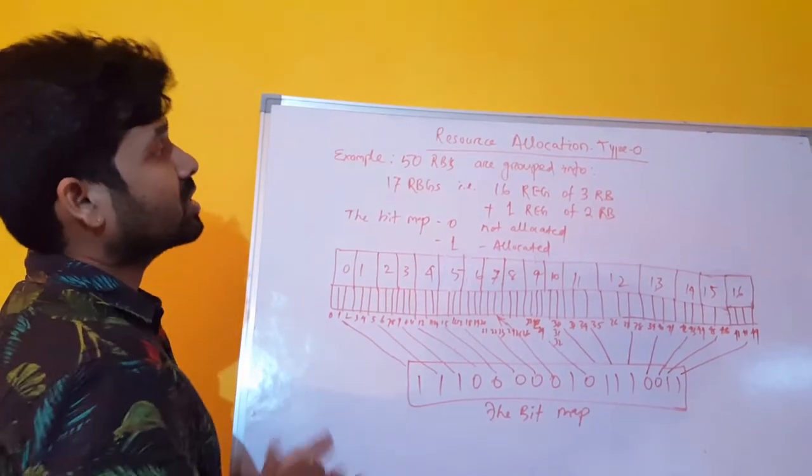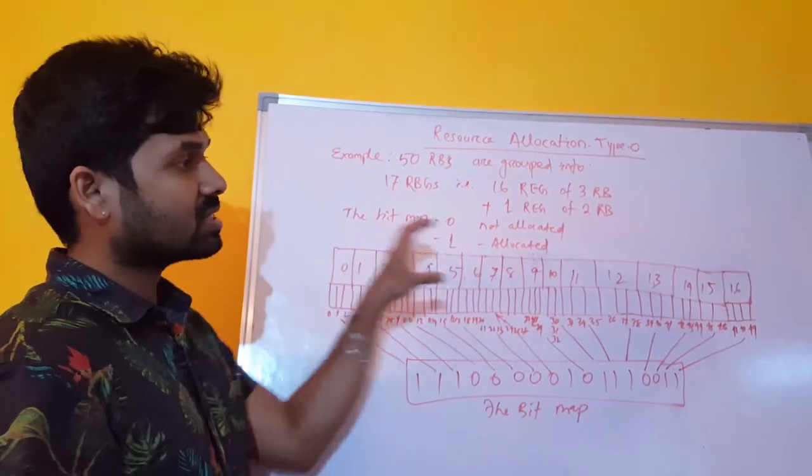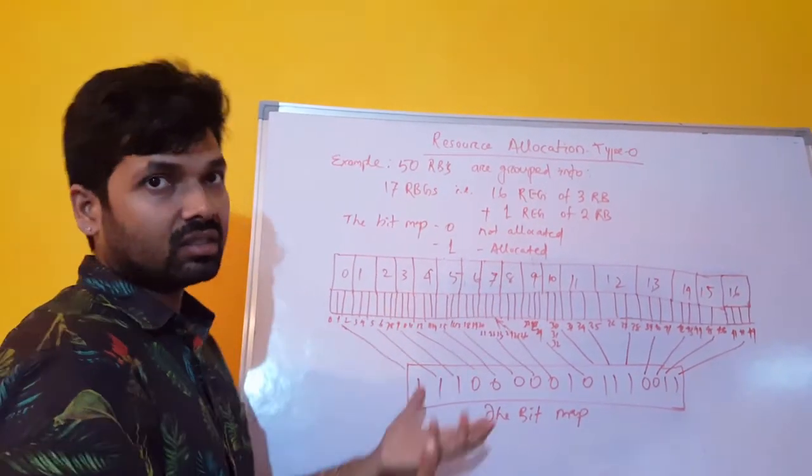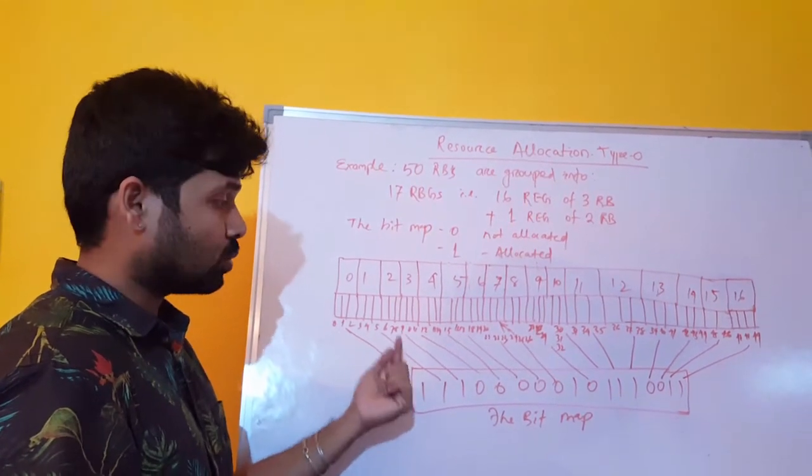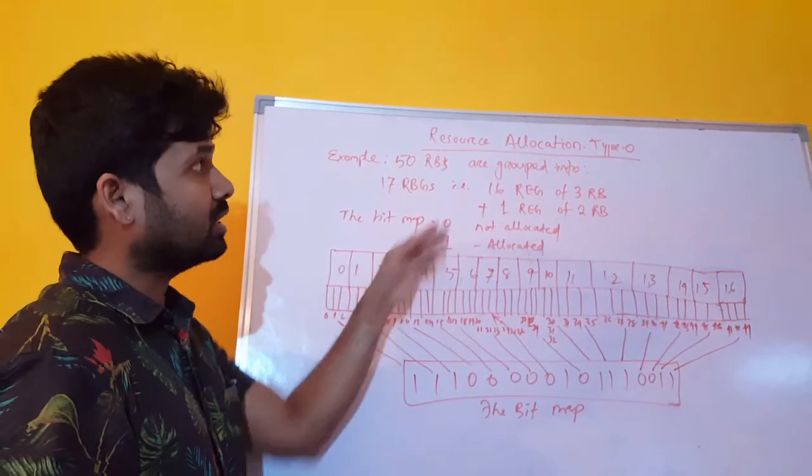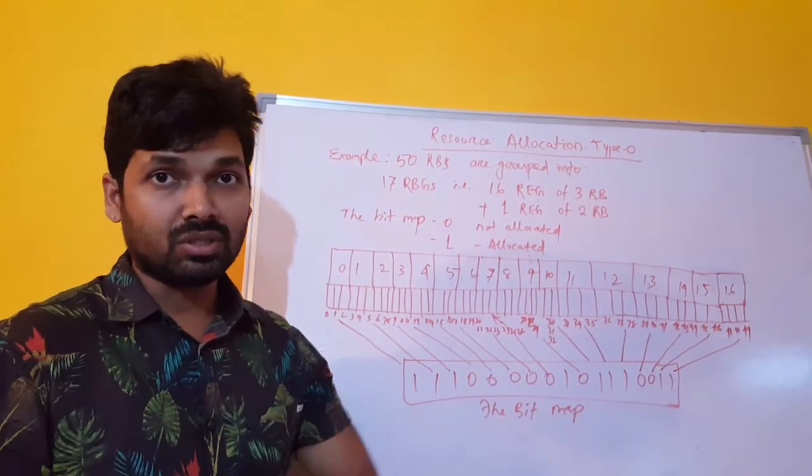So this is a good example to understand how the PDSCH resources are allocated to the users and how we use bitmap. That is 1 bit per resource element group in resource allocation type 0.